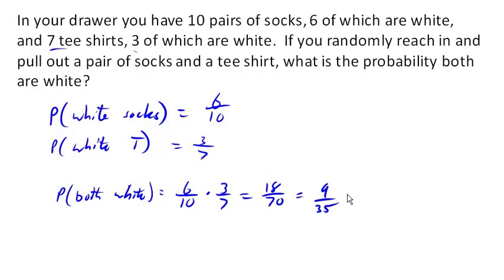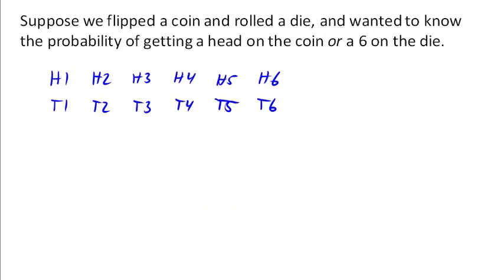Later on, we'll look at how to deal with the non-independent case. Now suppose we flipped a coin and rolled a die, and we wanted to know the probability of getting a head on the coin OR a 6 on the die. This is different from the AND problems we did earlier. Looking at all 12 outcomes, how many have a head on the coin or a 6 on the die? There are 7 outcomes that have either a head on the coin or a 6 on the die.